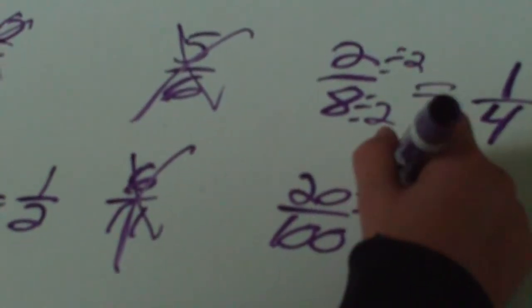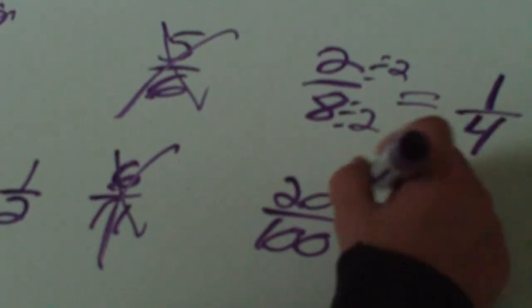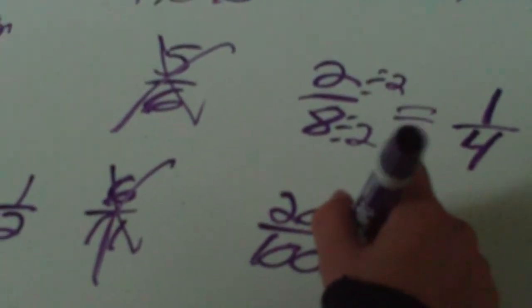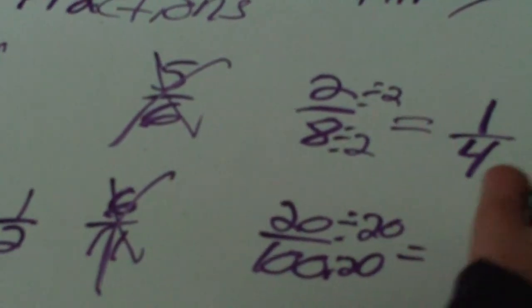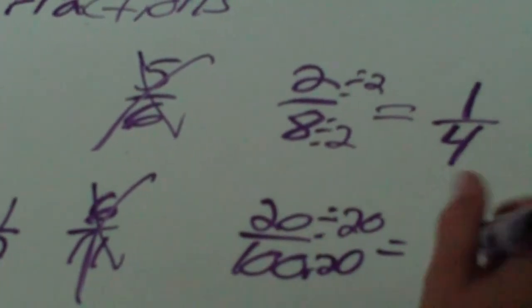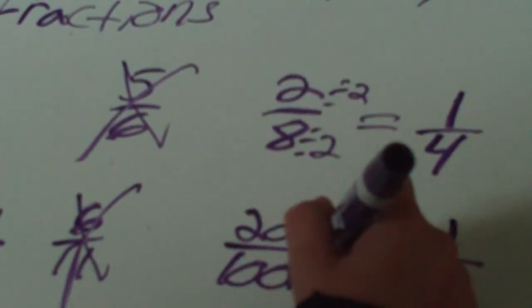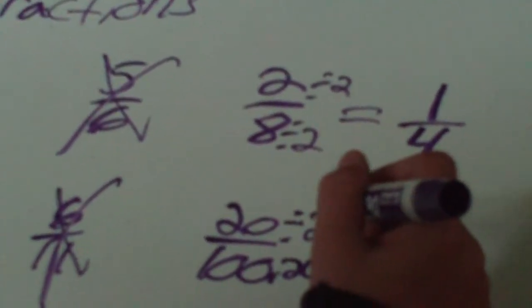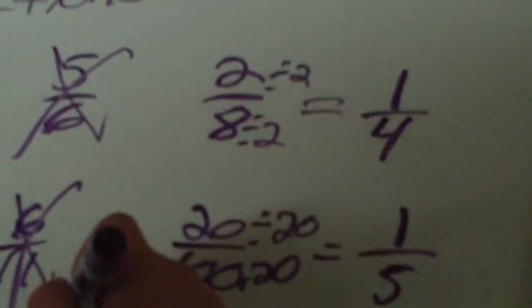And 20/100. 20 divided by 20 is 1. 100 divided by 20... 5. Let me see.